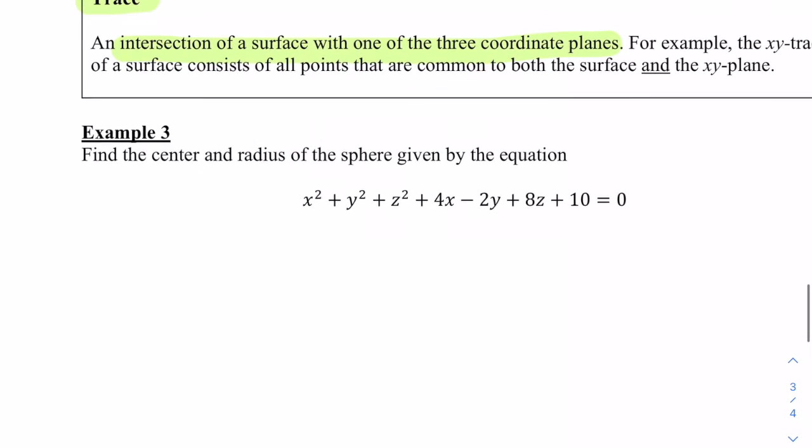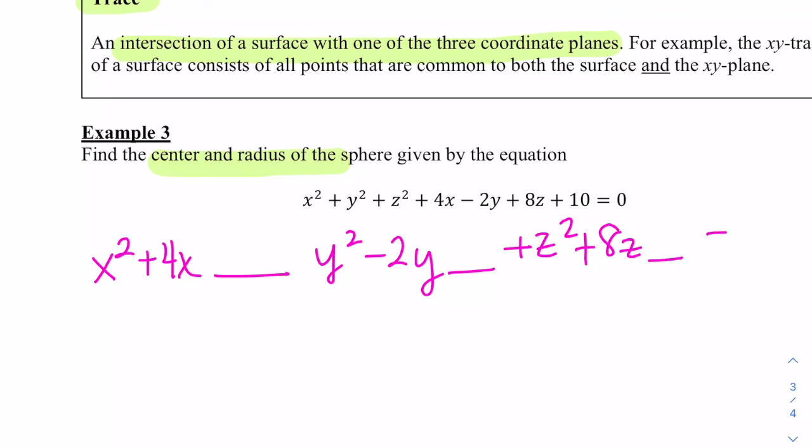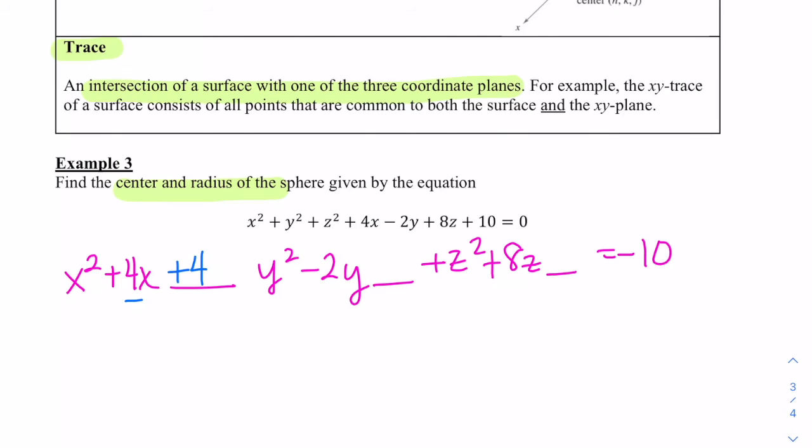Here we're going to find the center and radius of the sphere, and we're going to have to complete the square. Let's group all the terms together: x squared plus 4x, y squared minus 2y, z squared plus 8z, and subtract 10 from both sides. Looking at each term, we're going to complete the square, so that's plus 4, plus 1, and plus 16.